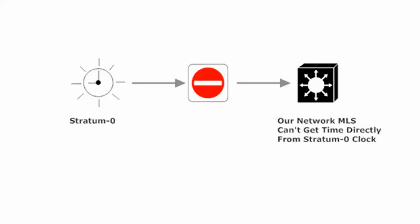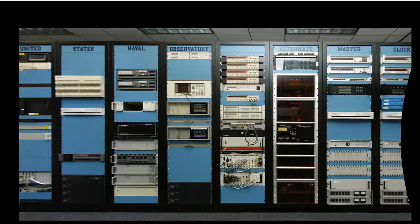I've got here our network MLS, or multi-layer switch — that's a symbol for a device, a switch that can run at both layers two and three. If we use a multi-layer switch, if we use a router, whatever we're using, we can't get the time directly from a Stratum Zero device. Stratum Zero is at the top of the NTP hierarchy. This image is from Wikipedia — it's the US Naval Observatory Alternate Master Clock at Schriever Air Force Base in Colorado, and it is a Stratum Zero device for NTP.